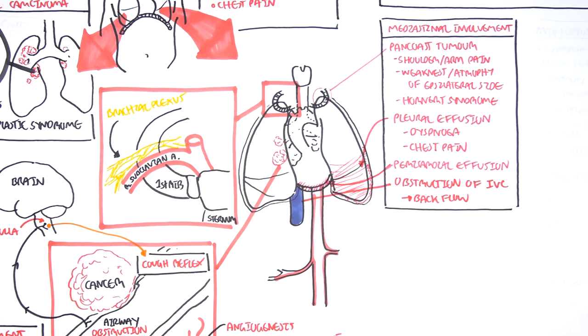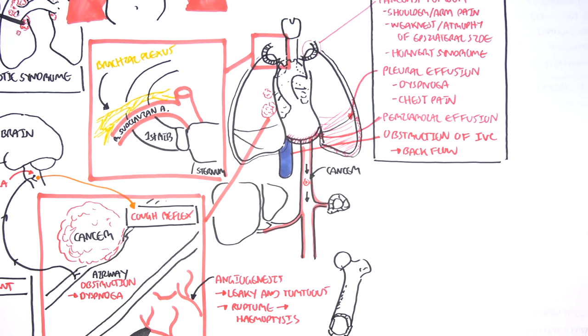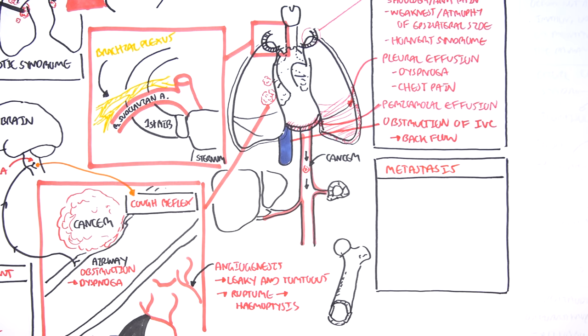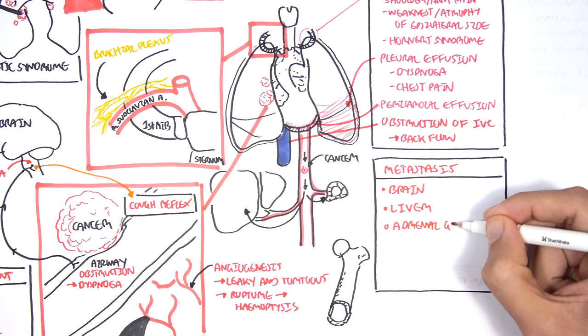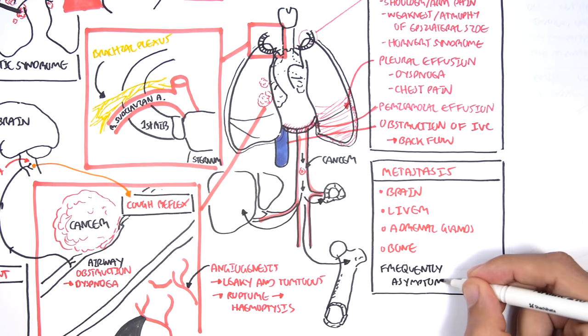Lung tumors can metastasize and they do. When it metastasizes, it goes to the heart and then the heart will pump the tumor, the growth, the cancer, either up to the brain and upper limbs or down to the abdomen area. Common sites of lung metastases include the brain, the liver, the adrenal glands, and the bone. Metastatic sites are commonly asymptomatic.